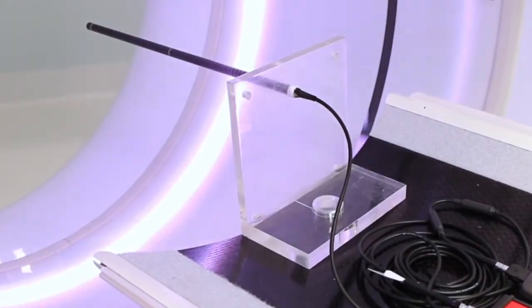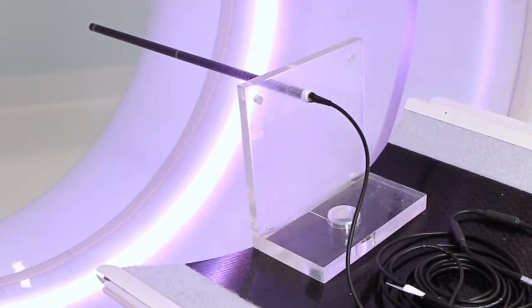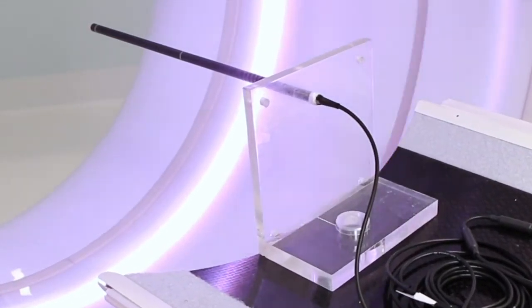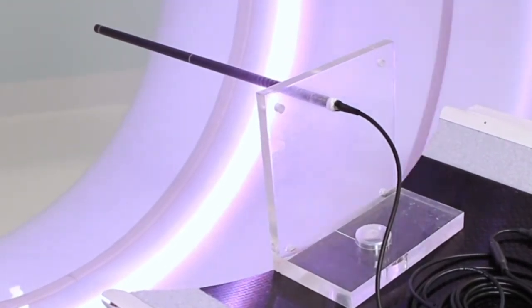Place the ion chamber into its holder and onto the patient table and fixate it properly to prevent it from moving. Since there are various holders on the market, we will not guide you through this step.